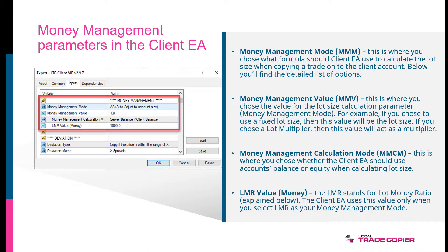If you put two, then all the lot sizes will be multiplied by two. MMCM is where you choose whether the client EA should use the account's balance or equity when calculating lot size. By default, the calculation formula uses the master account balance and the client account balance. But you might want to use different combinations — like equity from the master account and equity from the client, or equity from master but balance from the client. It has multiple options, but the default balance-and-balance setting is what probably 95% of people use.